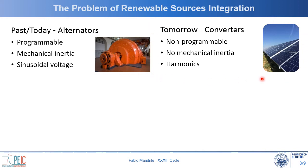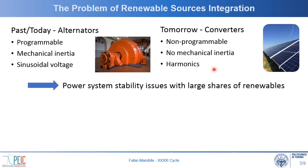Tomorrow, we will shift towards converter-based production, such as from the sun or from the wind, which is, on the other hand, not programmable, depending on the weather. It doesn't have mechanical inertia, because, for example, solar panels don't have moving parts. And since it's based on inverters, it features switching harmonics. Therefore, there may be power system stability issues with a large share of renewables integrated into the grid.